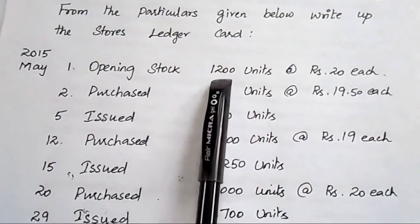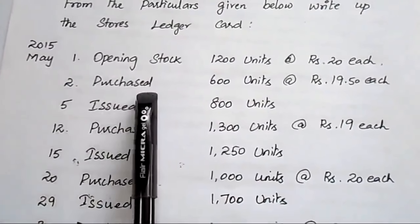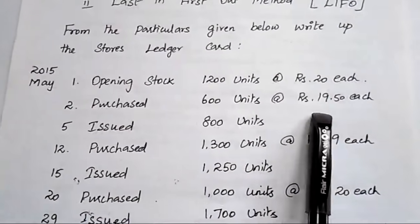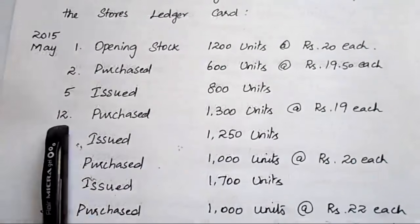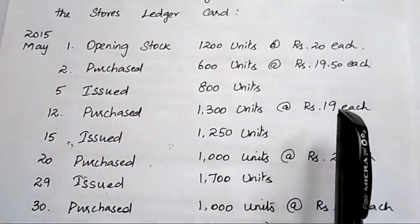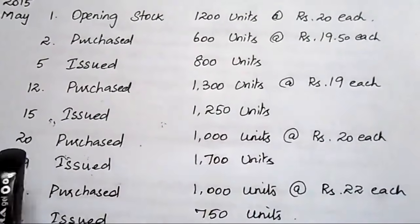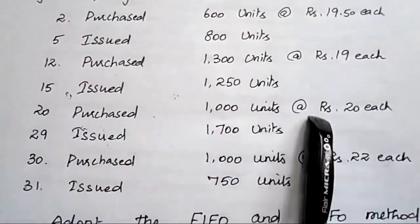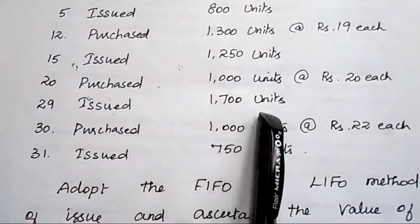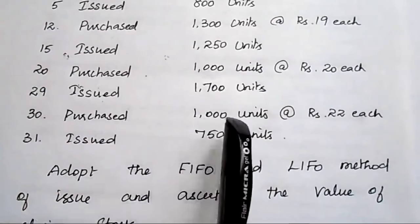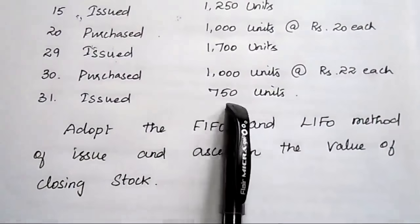The last year's closing stock is the opening stock for the current year. On 2nd May, purchased 600 units at ₹19.50 each. On 5th May, issued 800 units. On 12th May, purchased 1300 units at ₹19 each. On 15th May, issued 1250 units. On 20th May, purchased 1000 units at ₹20 each. On 29th May, issued 1700 units. On 30th May, purchased 1000 units at ₹22 each. On 31st May, issued 750 units.